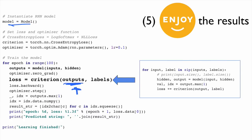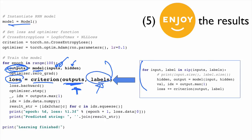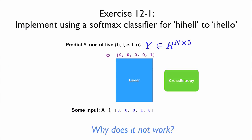Instead of looping, we feed the entire input at once, pass the labels, and compute the loss directly. For an exercise, try implementing next-letter prediction using only a multi-class softmax classifier, without RNN. See if you can figure out why it doesn't work very well.